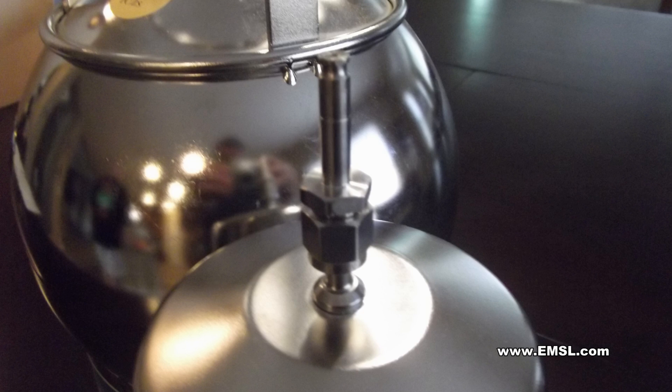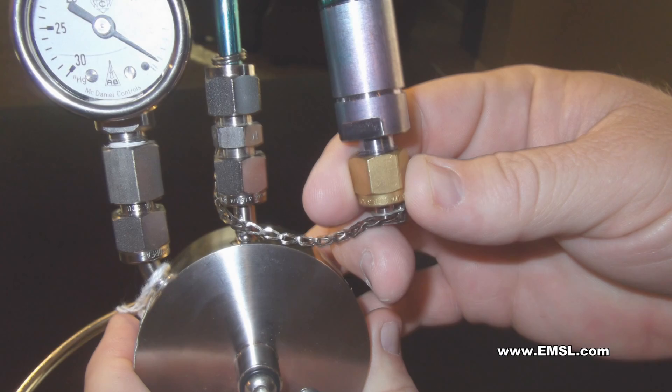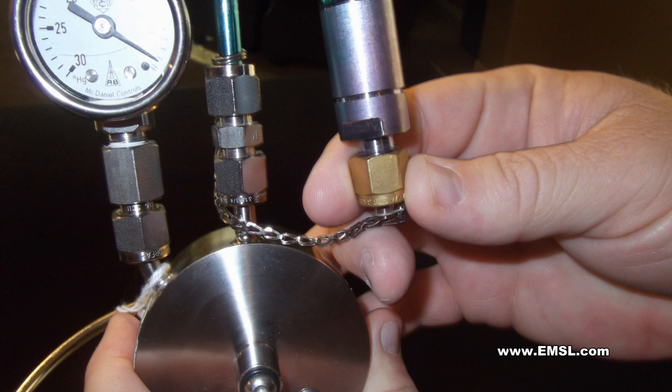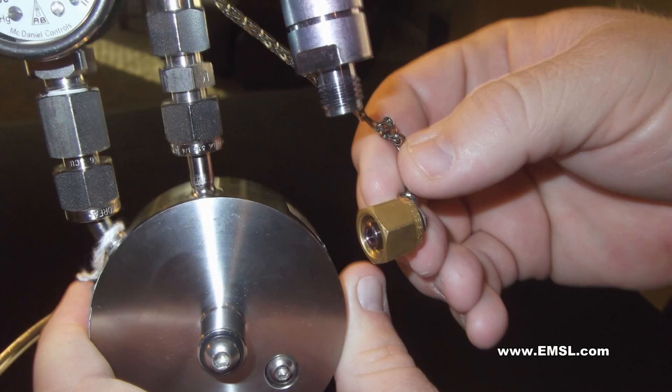Before attaching the can to the regulator, loosen the brass cap attached to the chain on the end of the regulator, if present, and let it dangle.